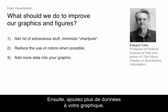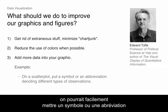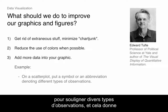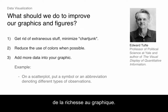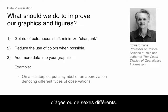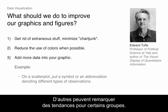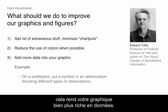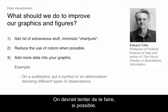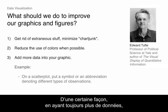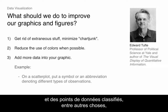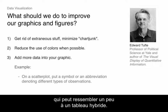Add more data into your graphic — make it more data-rich. Sometimes we have a scatter plot and we could easily put a symbol or abbreviation denoting different types of observations. That adds richness to the figure. Let's say you had 500 people of different ages or genders — you might be able to incorporate that. If you abstract away from that, you'll still get the scatter plot you had before, but you might see interesting patterns. Others may notice patterns for subgroups. It makes your graphic much more data-rich, so try to do that when possible.